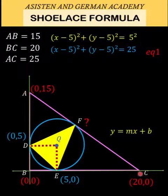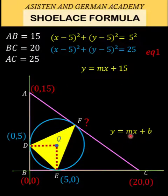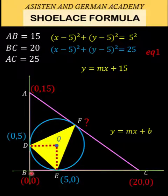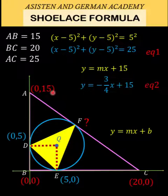Next, let's find the equation of line AC. The y-intercept is 15, so we have y = mx + 15. The slope is the rise over run from A to C: we move down 15 and right 20, giving a slope of −15/20 = −3/4. So the equation of line AC is y = −(3/4)x + 15. That's equation two.